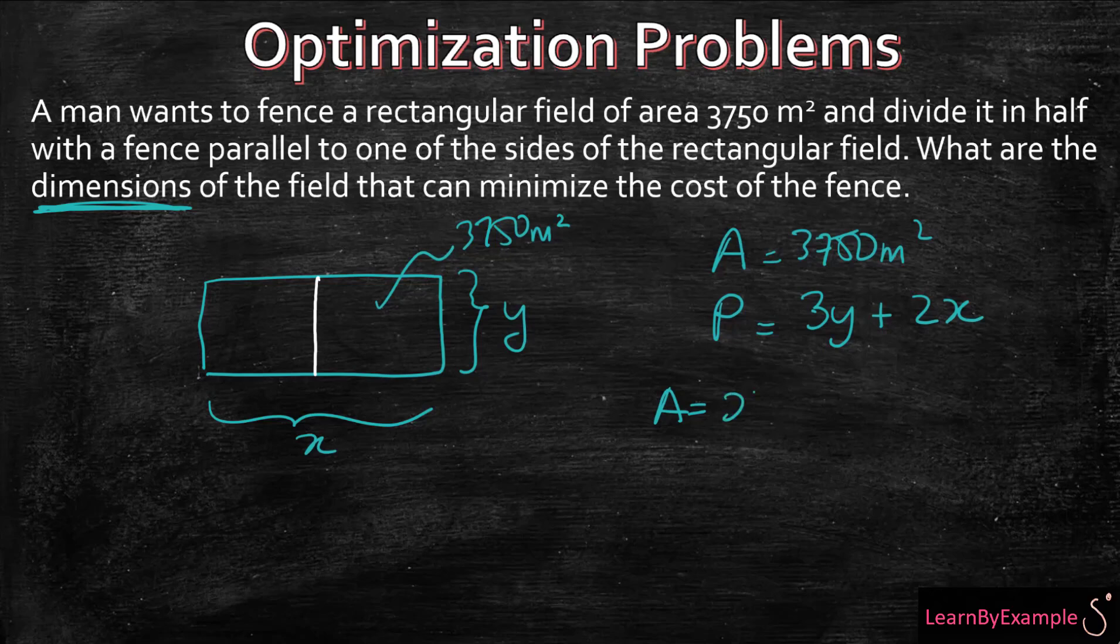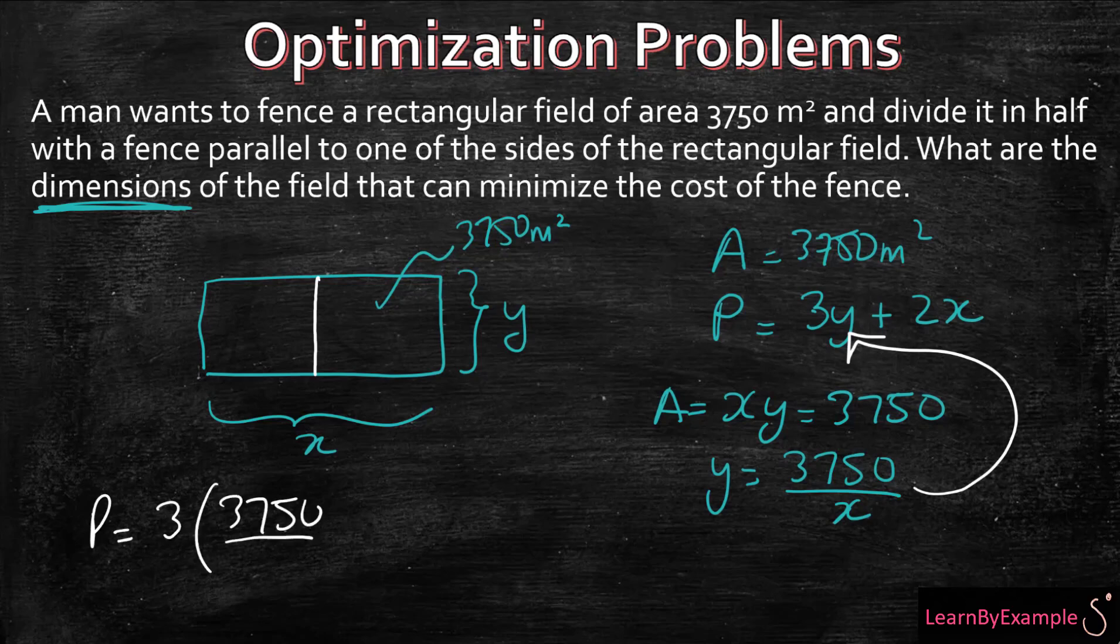We're going to use our area to help us do that. You know the area is going to be equal to X times Y, which equals 3,750. Let's write things in terms of Y. It's 3,750 divided by X. So let's rewrite the perimeter equation: it's 3 times 3,750 over X plus 2X. Let's expand that.